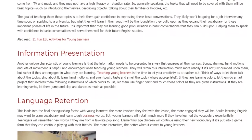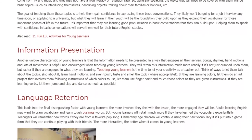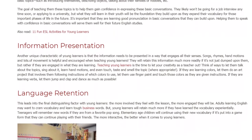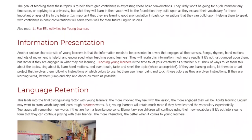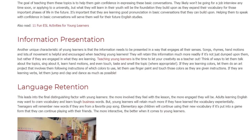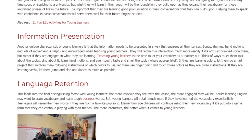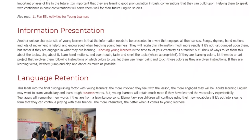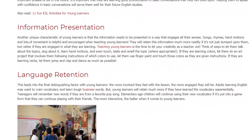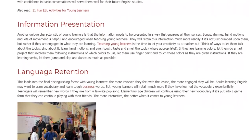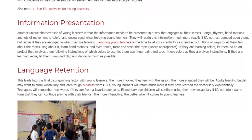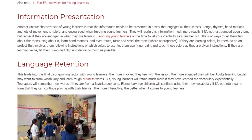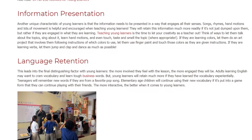Think of ways to let them talk about the topics, sing about it, learn hand motions, and even touch, taste and smell the topic where appropriate. If they are learning colors, let them do an art project that involves them following instructions of which colors to use. Let them use finger paint and touch those colors as they are given instructions. If they are learning verbs, let them jump and clap and dance as much as possible.